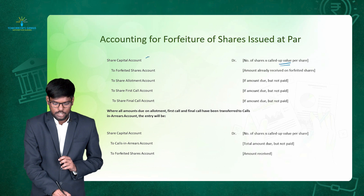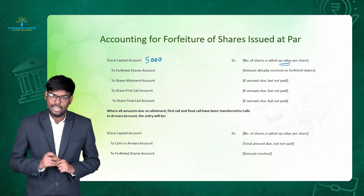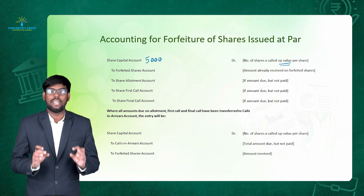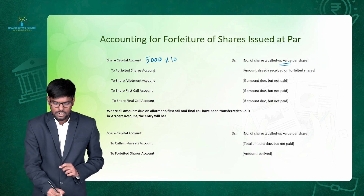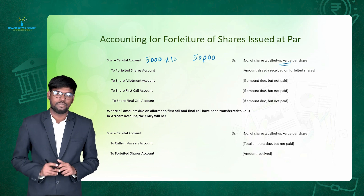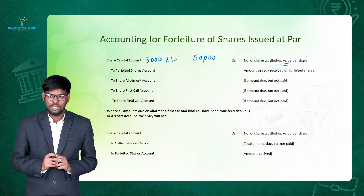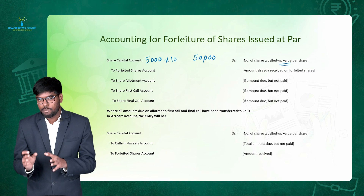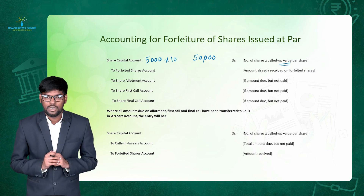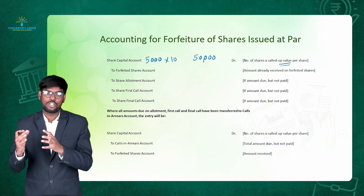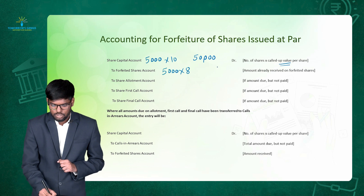In this example, the number of shares is 5000 and the total called up value is rupees 10. The share price is rupees 10 and the company called the entire 10 rupees, so the called up value per share is 10. So 5000 multiplied by 10 gives rupees 50,000 — that is the debit to share capital account. Then we need to credit share forfeiture account for the amount received from the shareholder so far. We were unable to get rupees 2, so we received rupees 8. That rupees 8 is a gain of the company, so we credit share forfeiture account: 5000 multiplied by 8 equals rupees 40,000.